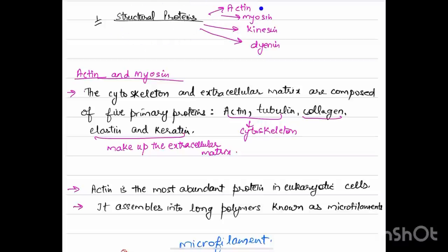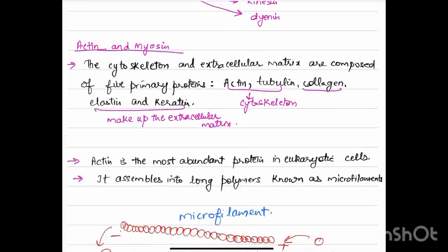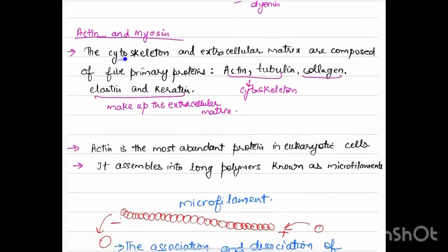There are a lot of structural proteins which we'll be discussing: actin, myosin, kinesin, and dynein. The cytoskeleton and extracellular matrix are composed of five primary proteins: actin, tubulin (part of cytoskeleton), collagen, elastin, and keratin. They make up the extracellular matrix.